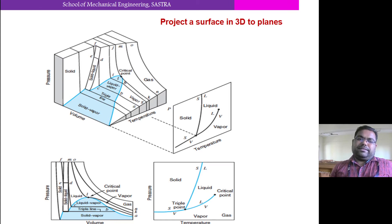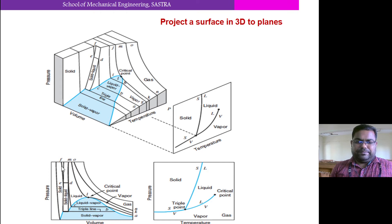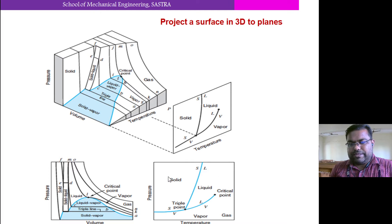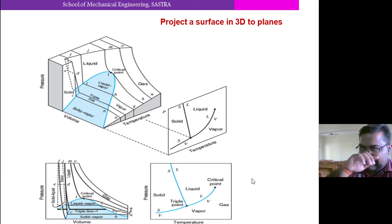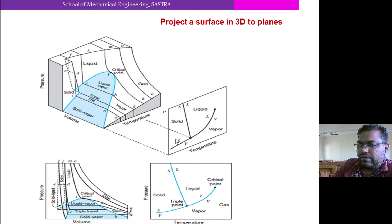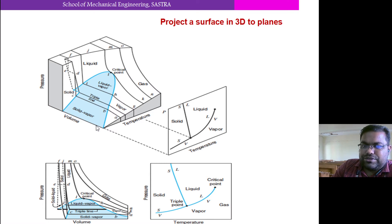If you measure the pressure at different temperatures — for solid up to the triple point line and for liquid up to the critical point — the variation results in this kind of pressure versus temperature curve. This is called the ice line, this is the sublimation curve, and this is the vapor curve. If you see from the side, the ordinates will be pressure and volume, giving the same curve discussed earlier — pressure versus volume. So this is the critical point, the vapor zone, and below the triple point line is solid and vapor. For pure substance which expands on freezing, particularly water, you can draw similar types of curves by viewing from sideways and front view. These are the different curves which can be extracted from the PVT surface.